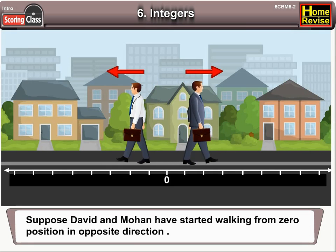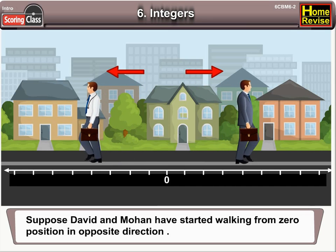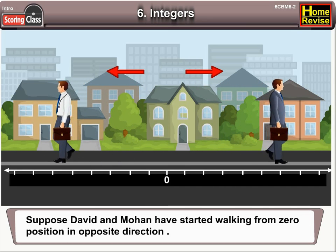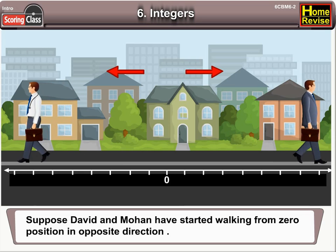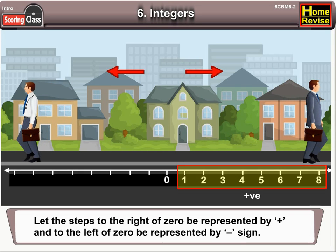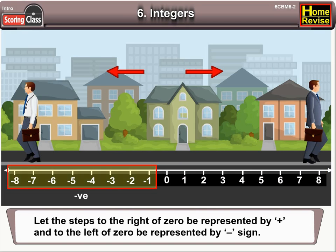Let us suppose David and Mohan have started walking from the 0 position in opposite directions. Let the steps to the right of 0 be represented by a plus sign and to the left of 0 be represented by a minus sign.